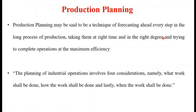Production planning is the planning of production and manufacturing modules in a company or industry. It utilizes resource allocation of activities of employees, materials, and production capacity in order to serve the different customers. So production planning is related to resource allocation in industries — resources like production material, activities, employees, and production capacities — to meet different customer requirements.